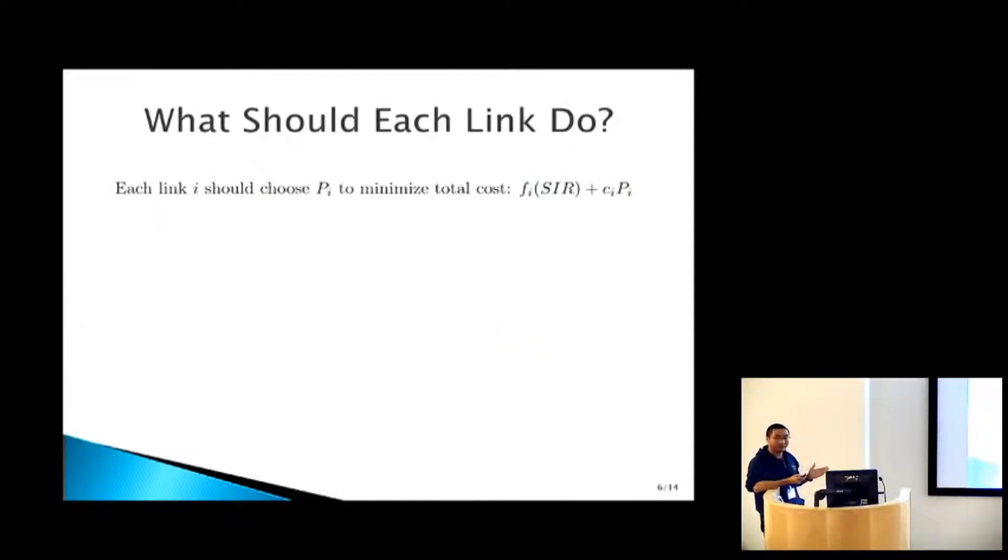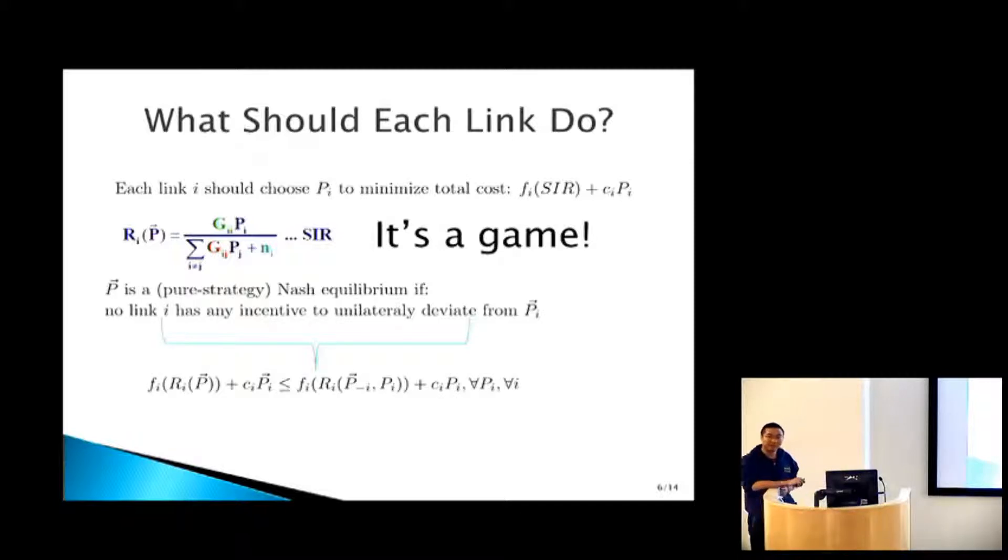With this setup, it's clear what each link wants to do. It wants to choose a power to minimize the total cost. You realize that the signal-to-interference ratio depends not only on the power you choose, but also on everyone else. So it's really a game. When you have a game, we'll proceed with the standard solution concept, something called Nash equilibrium.